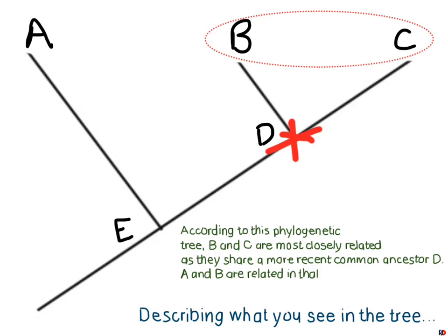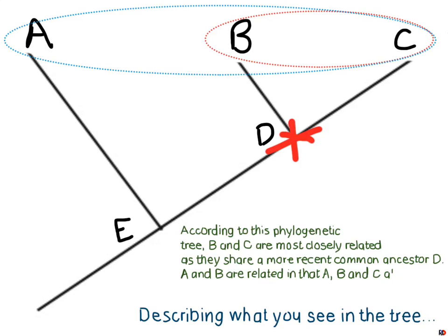A and B are related in that A, B, and C all share a common ancestor. But you can't say A and B are more closely related to each other than B and C, because you have to go further back in time to find the most recent common ancestor of all three — that's at E. So E is representing that common ancestor of all three of those taxa.